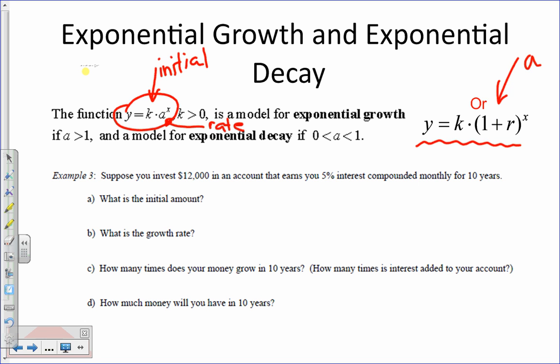Okay, so let's take a look at this problem. What is the initial amount of this problem, Nicolai? Why don't you read the problem first. Okay, suppose you invest $12,000 in an account that earns you 5% interest, compounded monthly. And the initial amount is $12,000. Good.